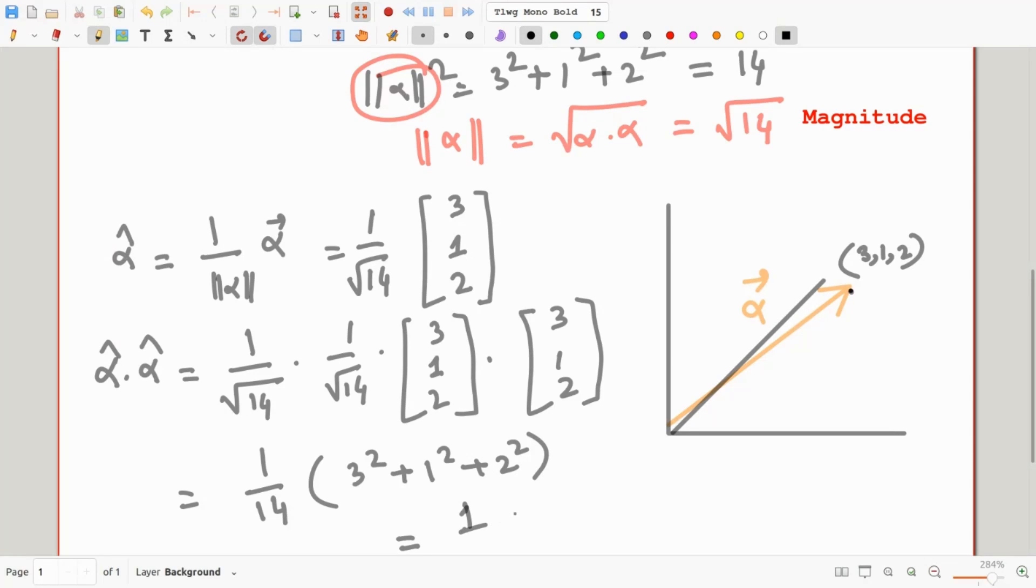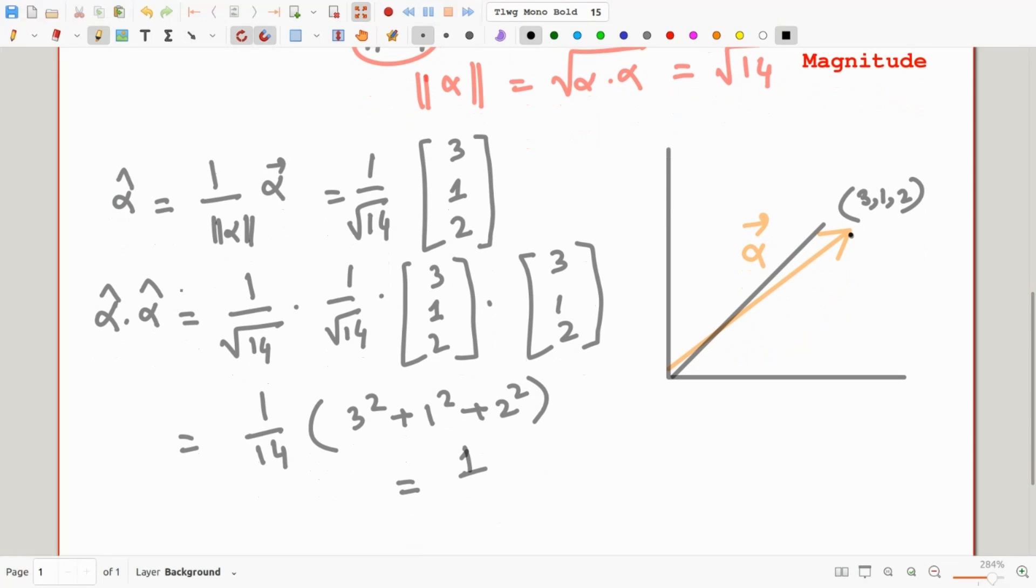Notice that the dot product of alpha hat with itself is just 1. That means that alpha hat has a special property. It is what's called a unit vector, being of course a fancy word for the number 1.